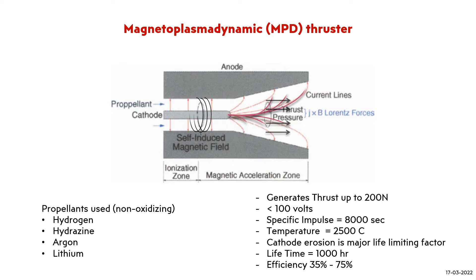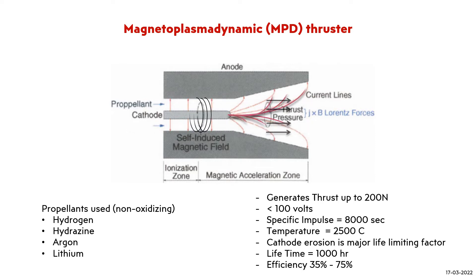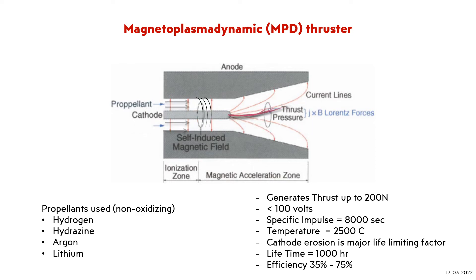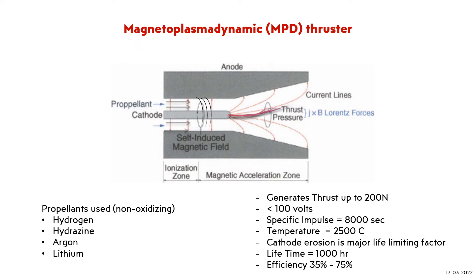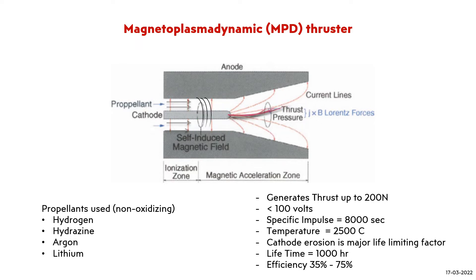The higher the power, the better the efficiency, which is typically around 35% and can be increased up to 75%. The performance characteristics make MPD Thrusters very attractive for manned missions. Obviously, the high power requirements can only be met in combination with nuclear power plants.